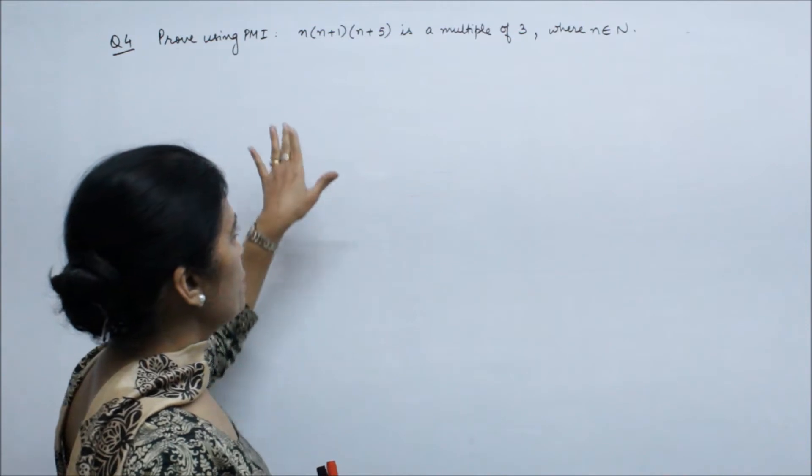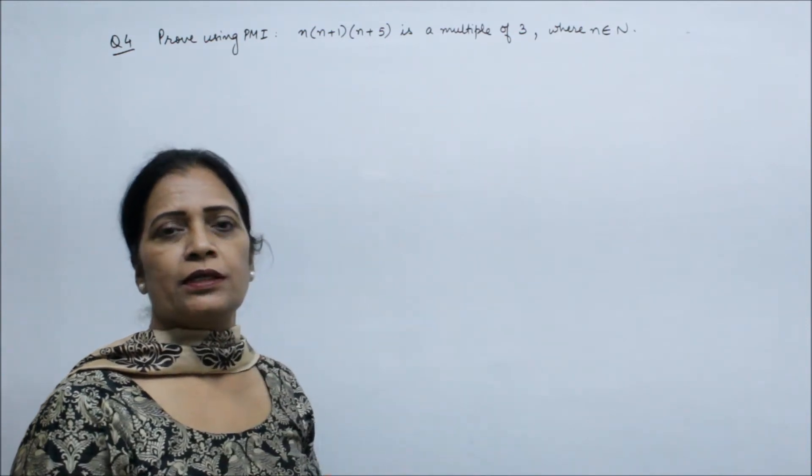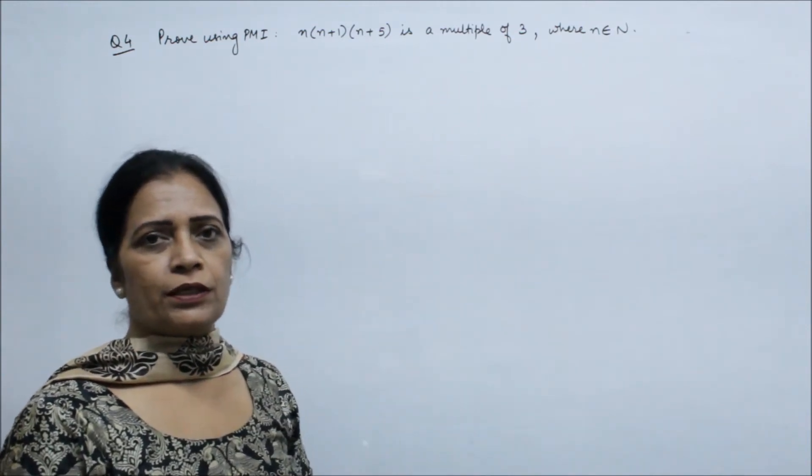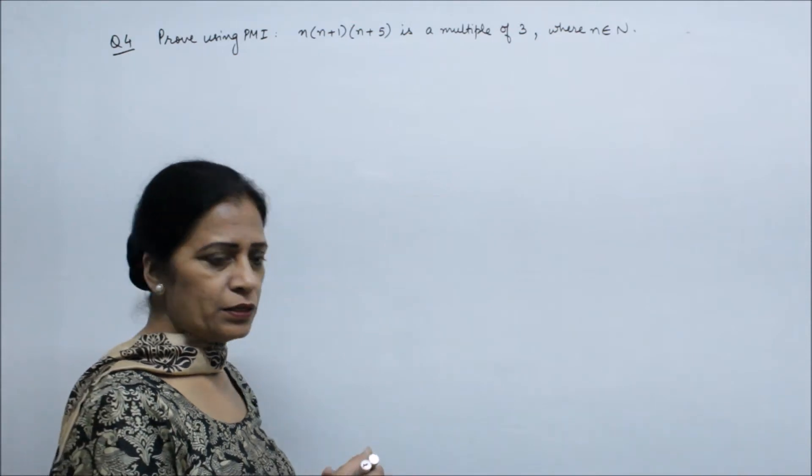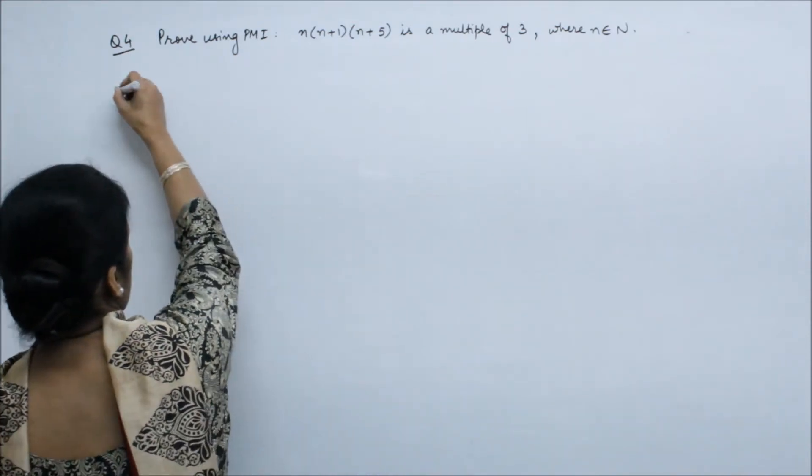In this case, many questions have multiple of 3, many questions have divisible by 3. The method for both is the same. Now let's see, we have to simplify.